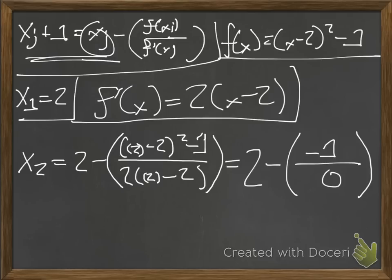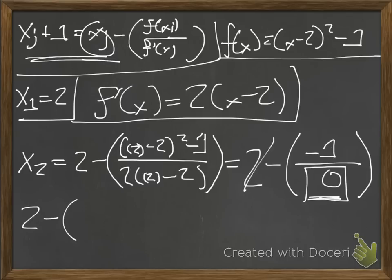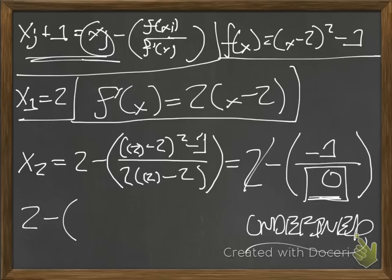So this gives us 2 minus (−1 / 0), which is undefined. We can't do this, because there's a 0 on the bottom — we'd be dividing by zero. This is 2 minus something undefined, which is precisely the point: because f'(x1) = 0, we have a horizontal tangent line, and −1/0 doesn't equal anything. This is one way Newton's method fails.